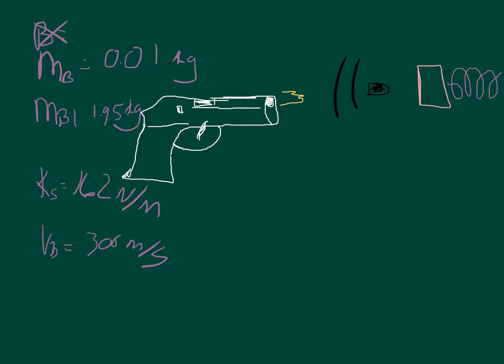We do know that there's an inelastic collision. The bullet is traveling from the gun, it hits the block and gets embedded in it — it doesn't bounce off. They're stuck together, so it's a perfectly inelastic collision.